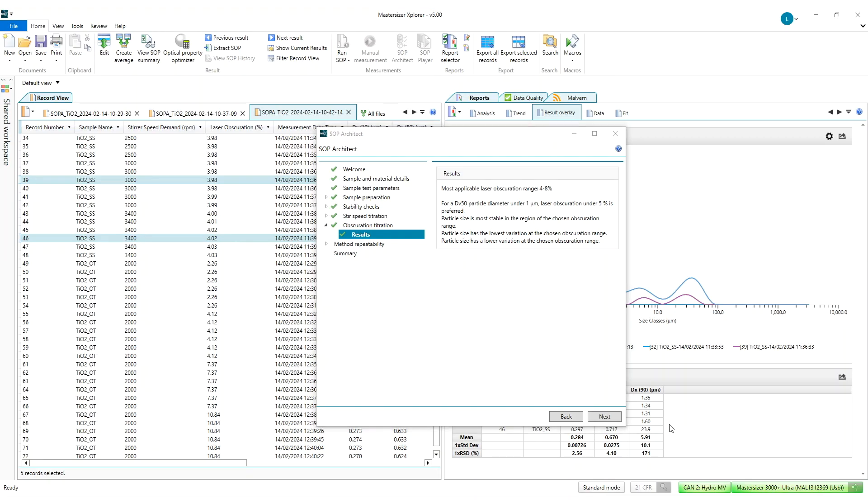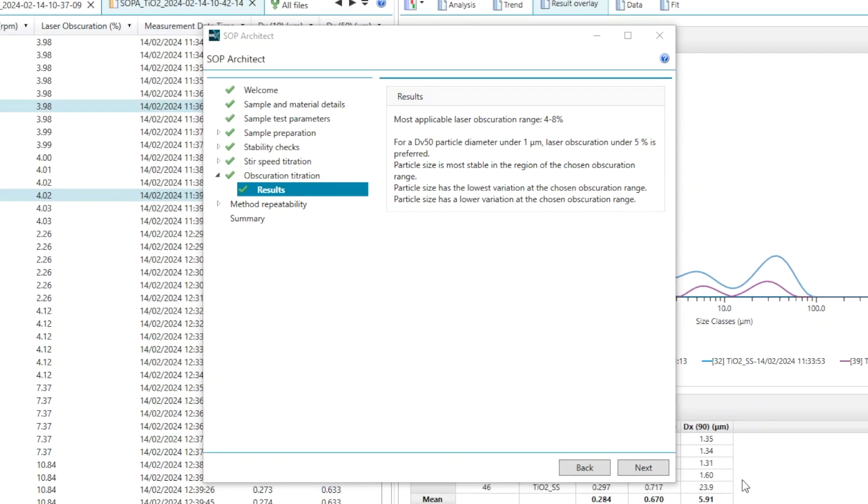So now that our obscuration titration has finished we can see that SOP Architect has given us an ideal obscuration range of between four and eight percent. This should give us a good amount of signal such that we have good signal to noise whilst minimizing the amount of multiple scattering that may be occurring that can lead to overestimating the amount of fines within our particle size distribution.